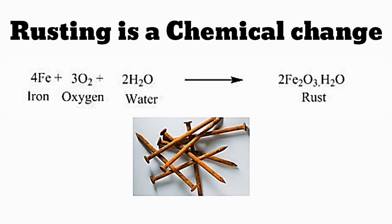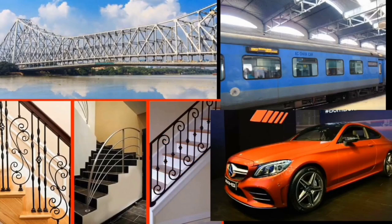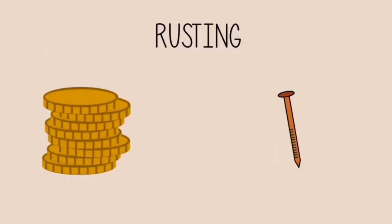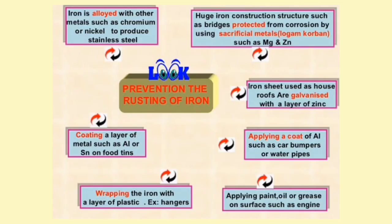Here you can see a number of pictures — all of these are made up of iron. Rusting can be very costly if we have to constantly change iron items, so rusting has to be prevented. Rusting can be prevented in the following ways.